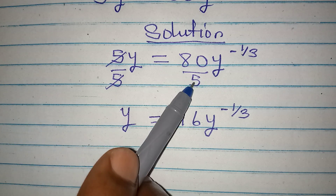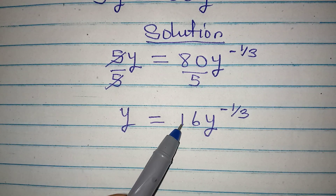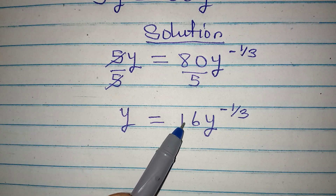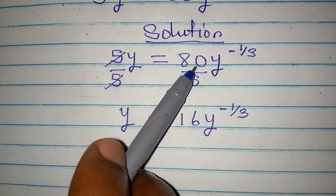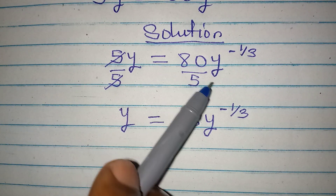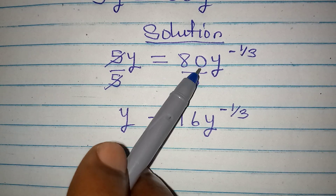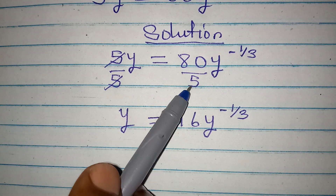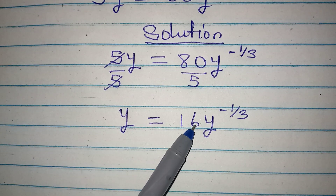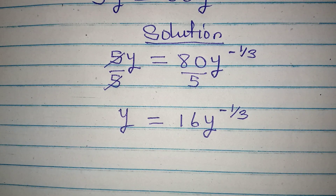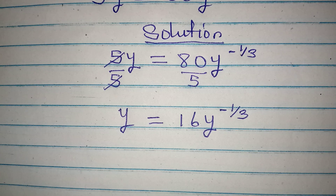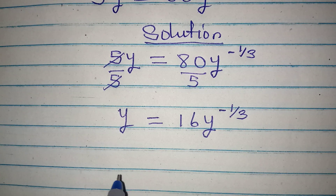Now let's confirm how we got that 16. 80 divided by 5: 8 divided by 5 is 1 remainder 3, making this 13, then 30. 30 divided by 5 is 6. So that is correct.